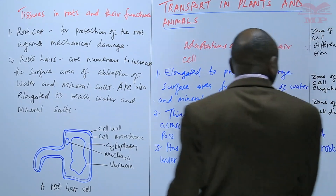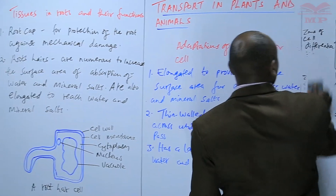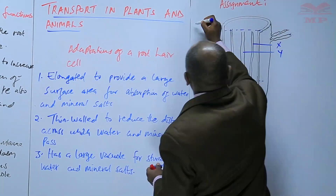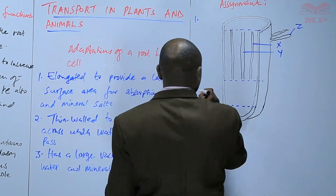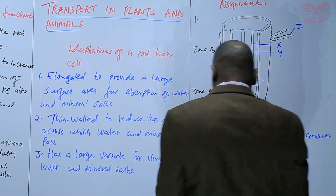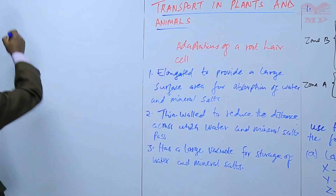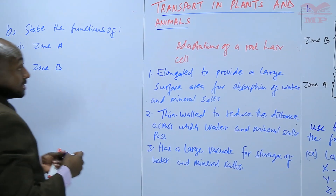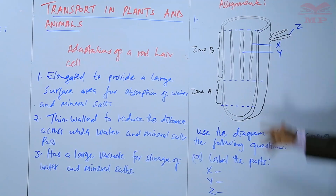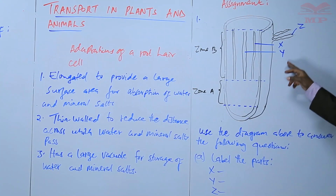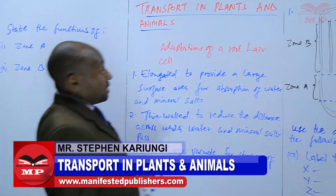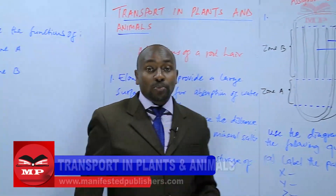We are going to stop there and have a short assignment on the same. There is a diagram and the question is: use the diagram above to answer the following questions — label the parts X, Y, and Z, and then state the functions of zone A and zone B. We are going to stop there; see you next time.